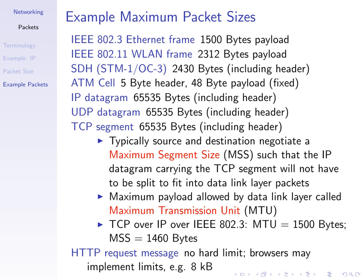For example, in a wired LAN — an Ethernet LAN — the IEEE 802.3 standard says a frame must contain 1500 bytes or less payload. That's the maximum size; it may be less. There are some optional features to increase to jumbo frames, but 1500 bytes is the typical size.